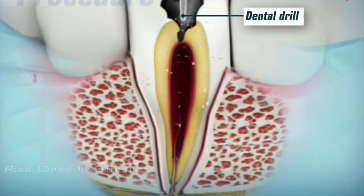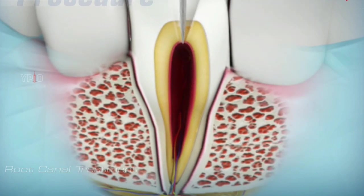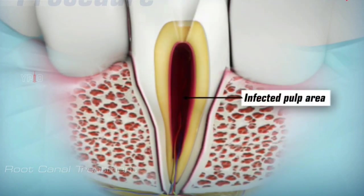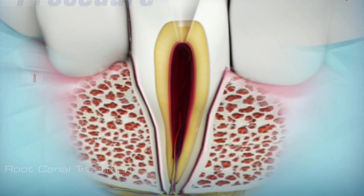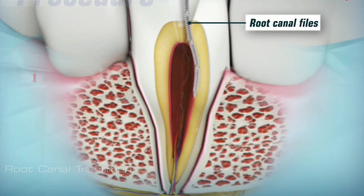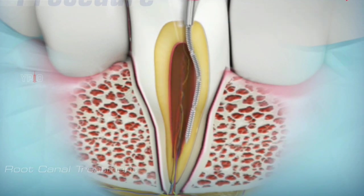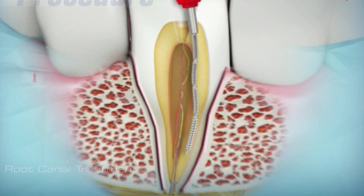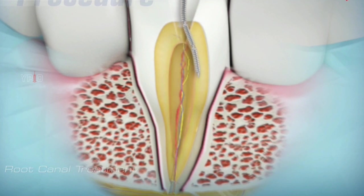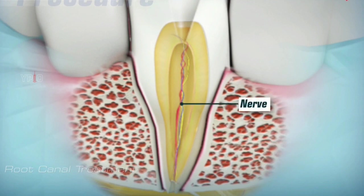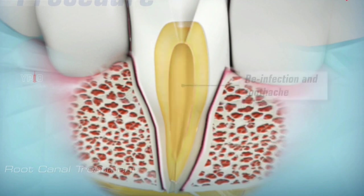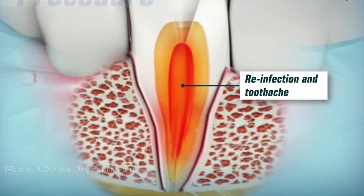Using a dental drill, an opening is created in the tooth to reach the infected pulp area. Then the infected contents of the pulp chamber are carefully removed using root canal files. A series of root canal files of increasing diameter are subsequently placed into the access hole and worked down the full length of the tooth to scrape and scrub the sides of the root canals. It is necessary to remove the entire nerve in order to prevent reinfection and toothache after the procedure.